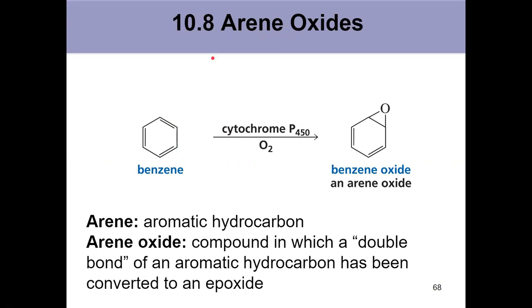We've seen arenes before, though we really haven't used that vocabulary. An arene is an aromatic hydrocarbon. Benzene is the one that we all quickly recognize. An arene oxide has taken one of the pi bonds in that aromatic ring and converted it to an epoxide. So going from benzene to benzene oxide, this is an arene oxide.